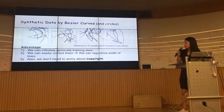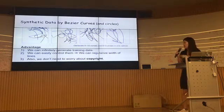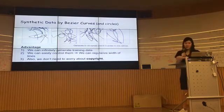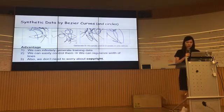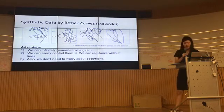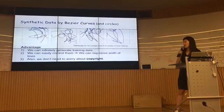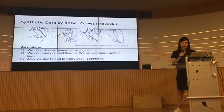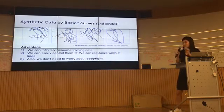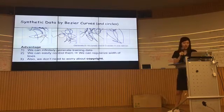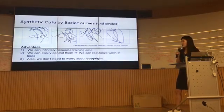We generate synthetic data using Bezier curves and small circles — five to fifteen curves and zero to three circles per canvas, where each canvas is one data sample. We can infinitely generate this training data and easily control it. We draw Bezier curves with even line width to get clean line art. And most importantly, we don't need to worry about any copyright.